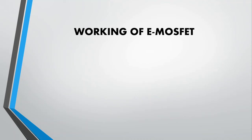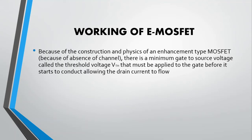Let us start the working of the enhancement type MOSFET. Before starting, you need to remember some important points. Because of the construction and physics of the enhancement type MOSFET — that is, because of the absence of a channel — there is a minimum gate-to-source voltage called the threshold voltage that must be applied to the gate before the enhancement type MOSFET starts to conduct and before we have drain current.